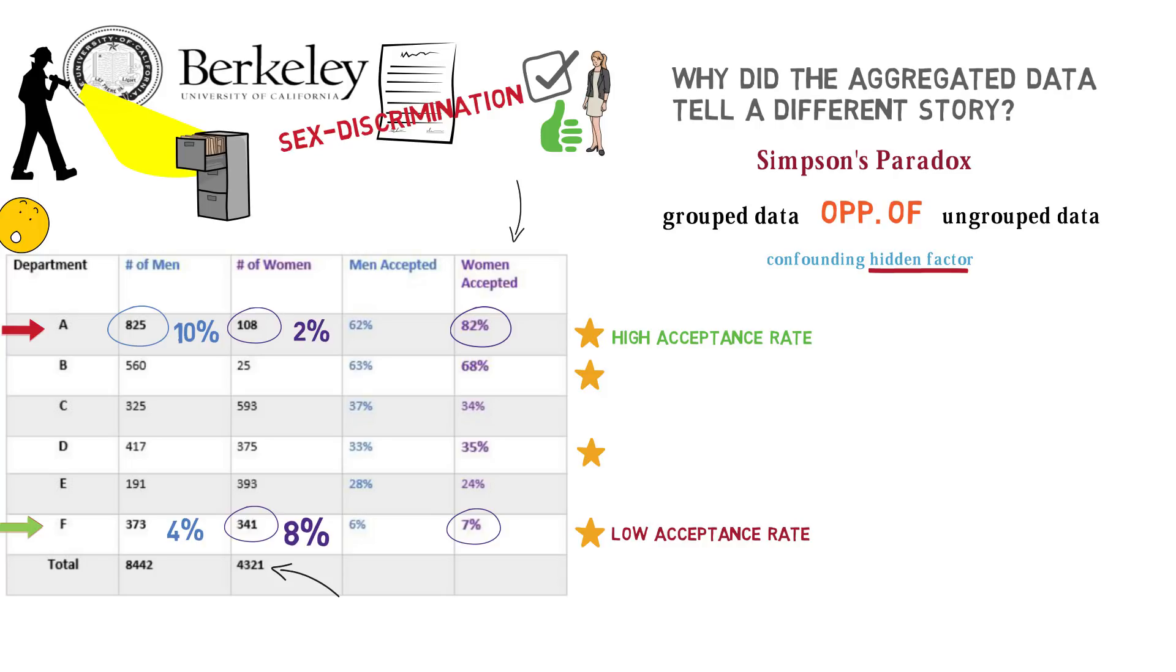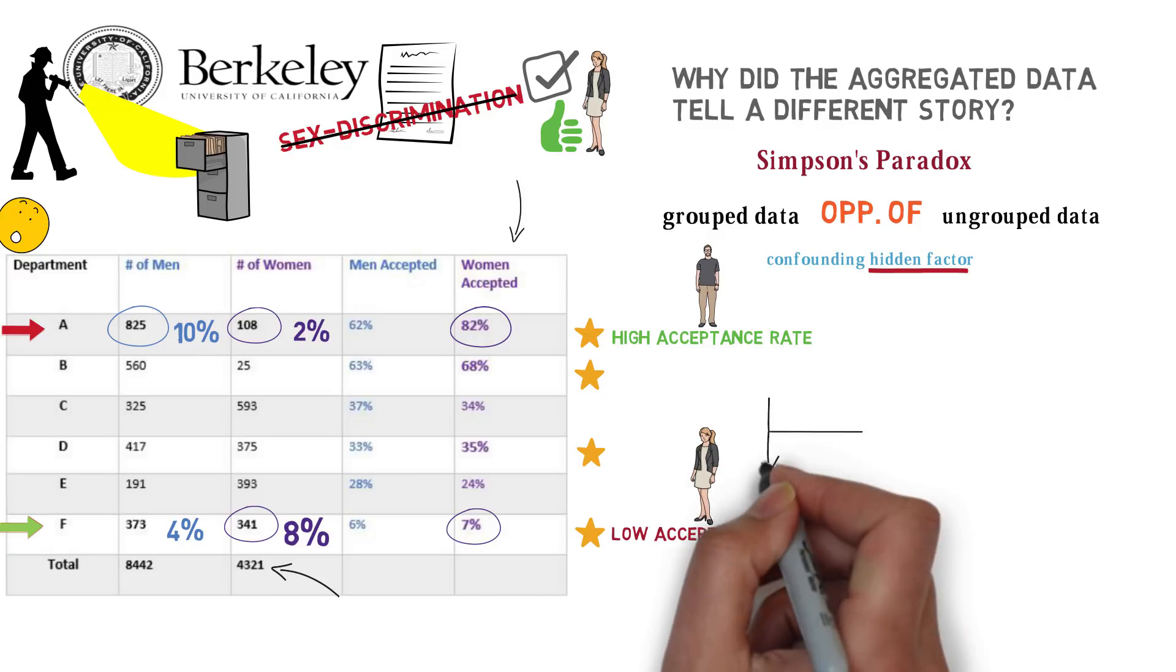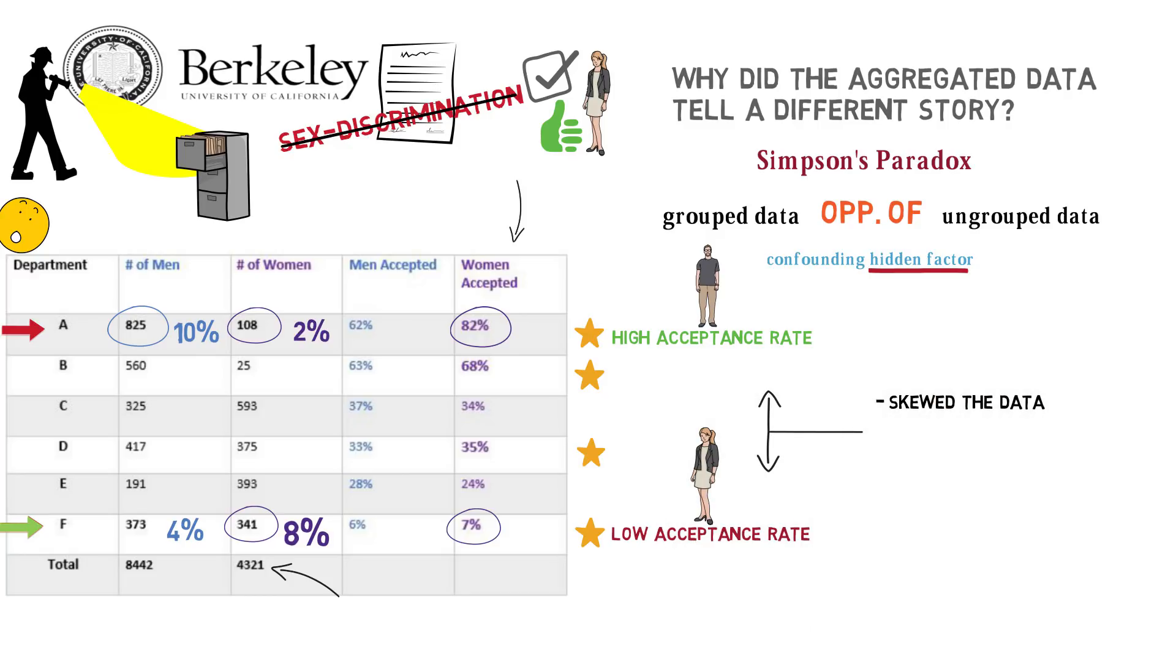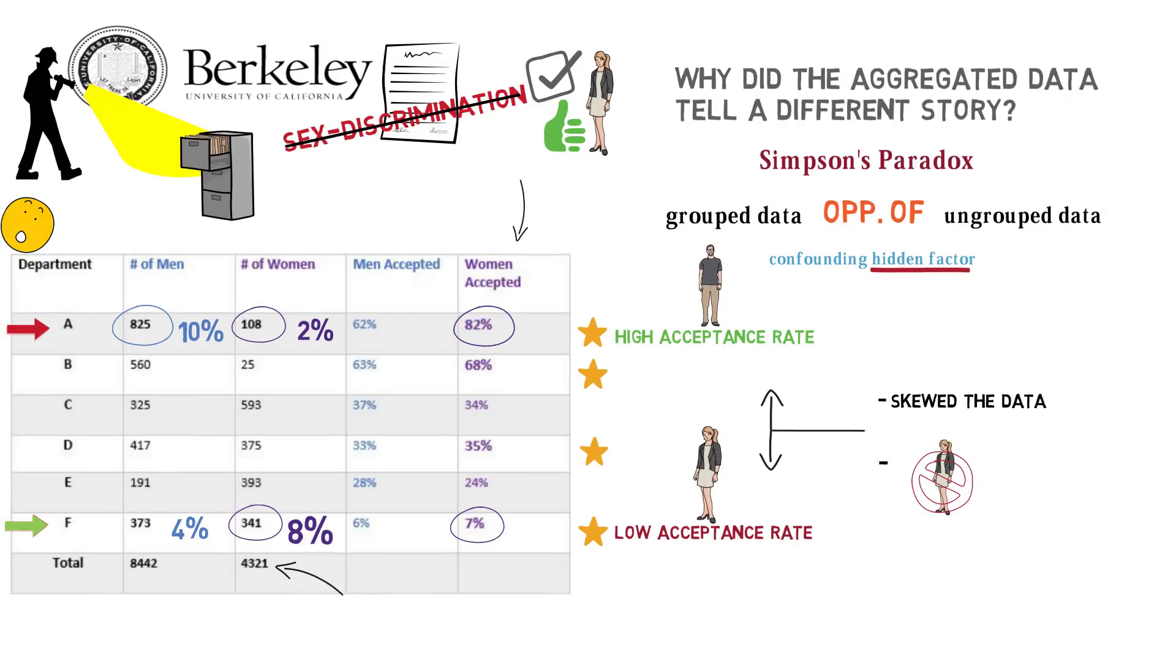So in truth, women weren't really being discriminated against. It just so happened that a large proportion of them were applying to a low acceptance rate department, while a large proportion of the men were applying to a high acceptance rate department. That skewed the overall results and made it seem that women were being rejected across all departments.